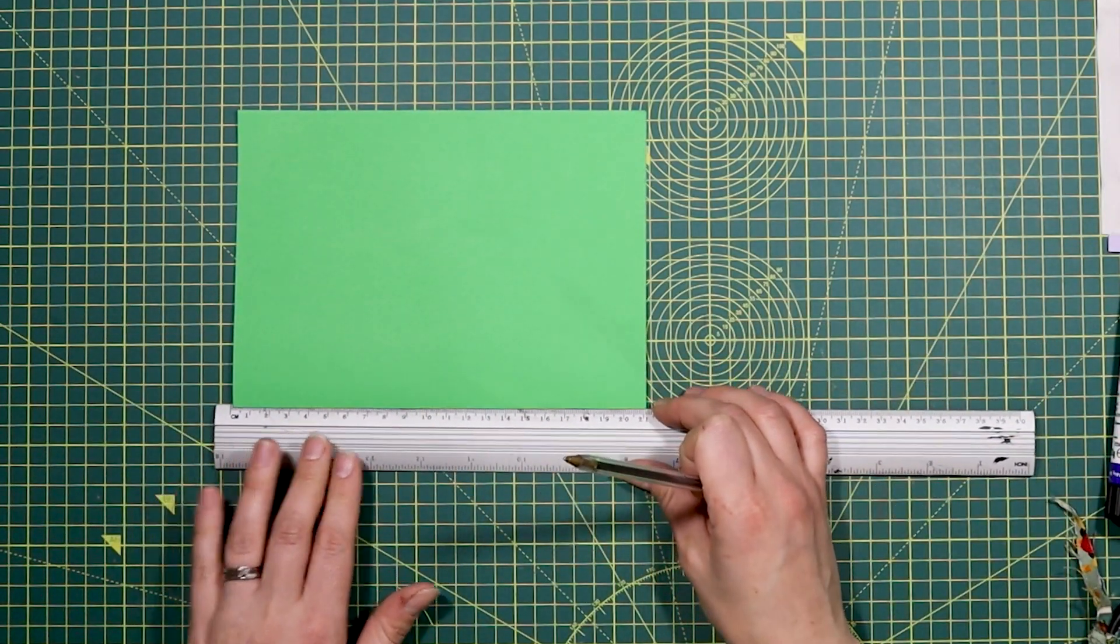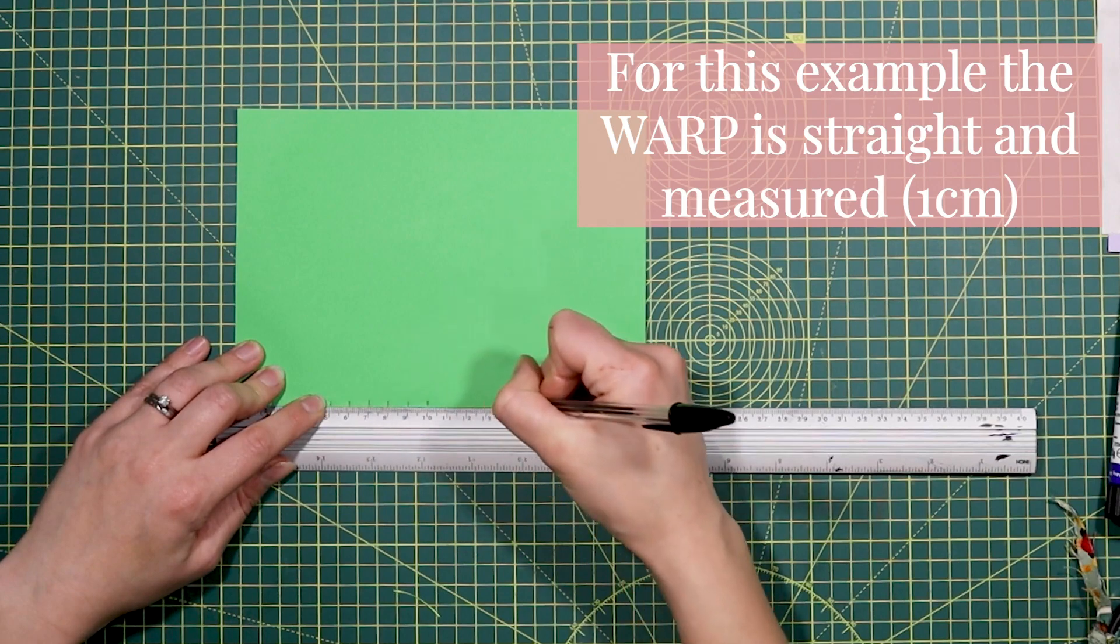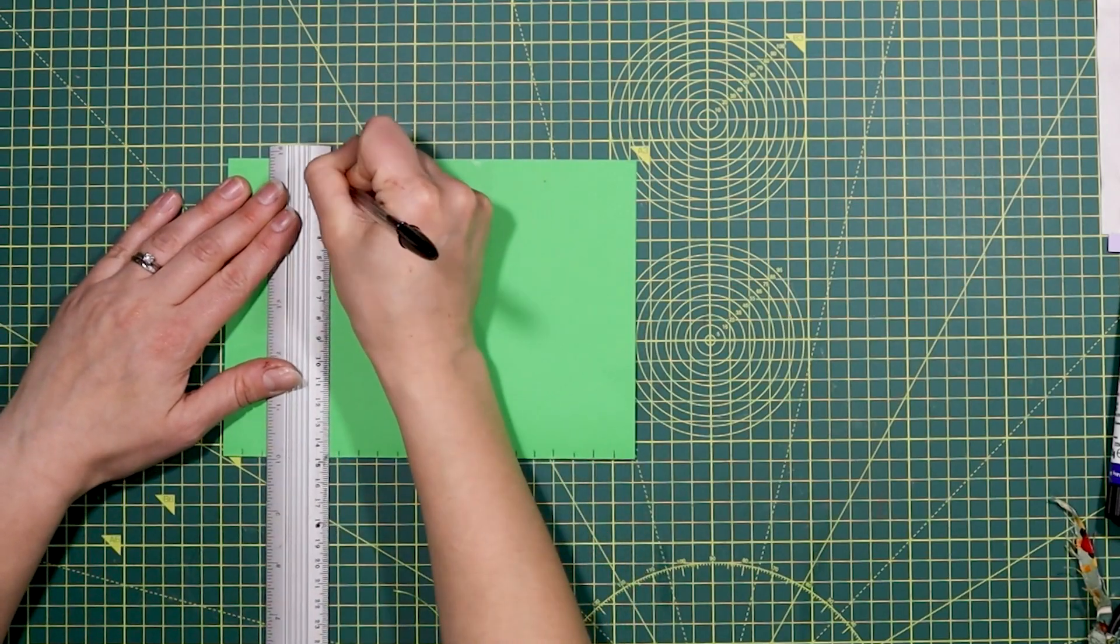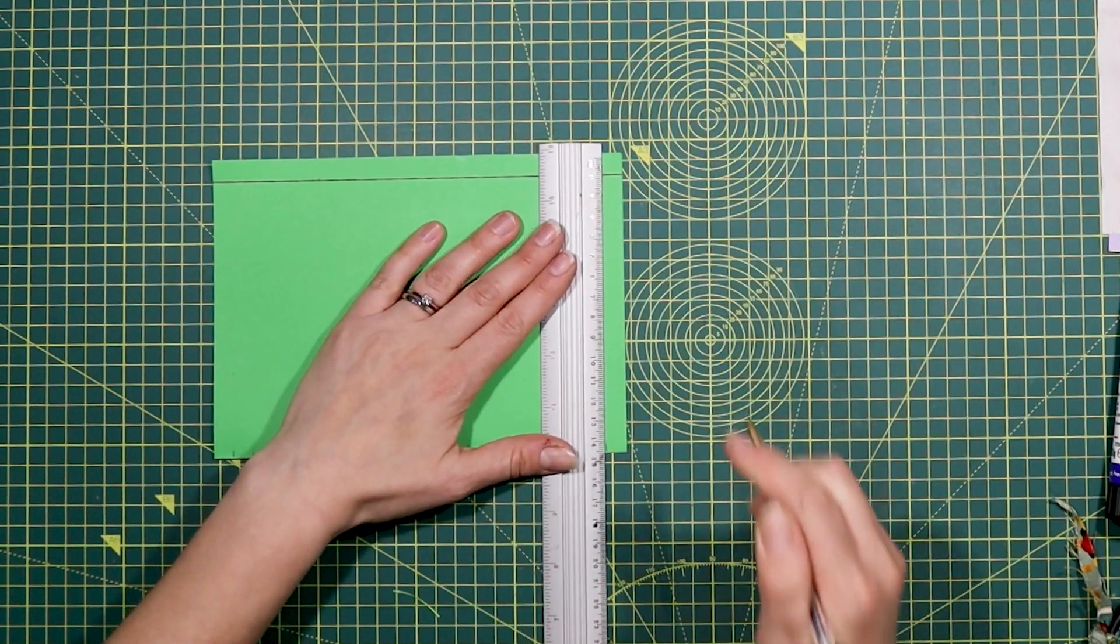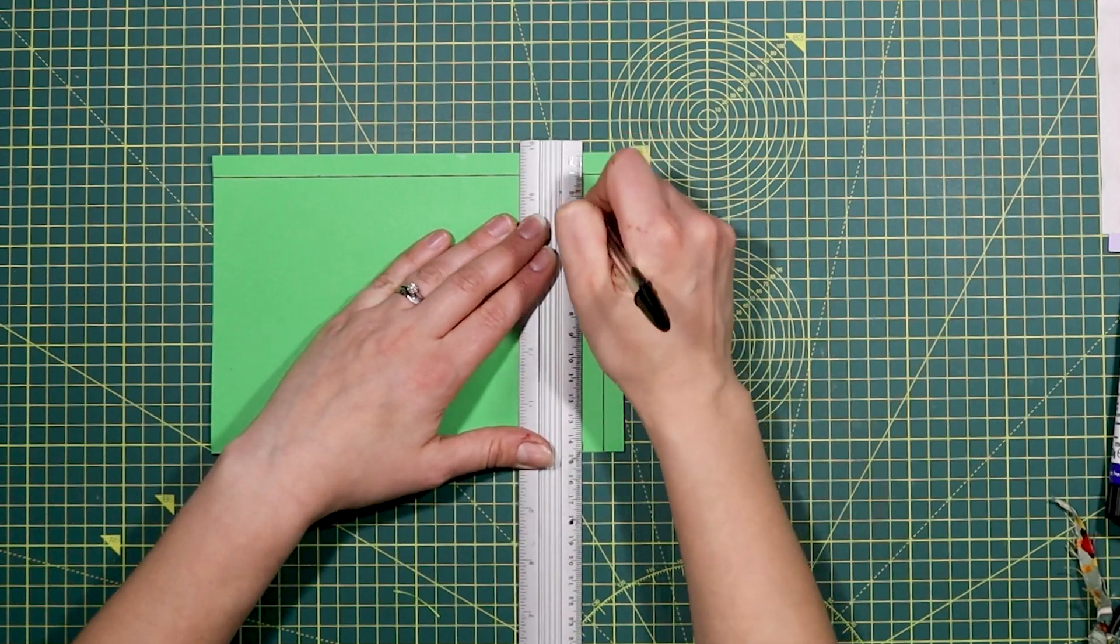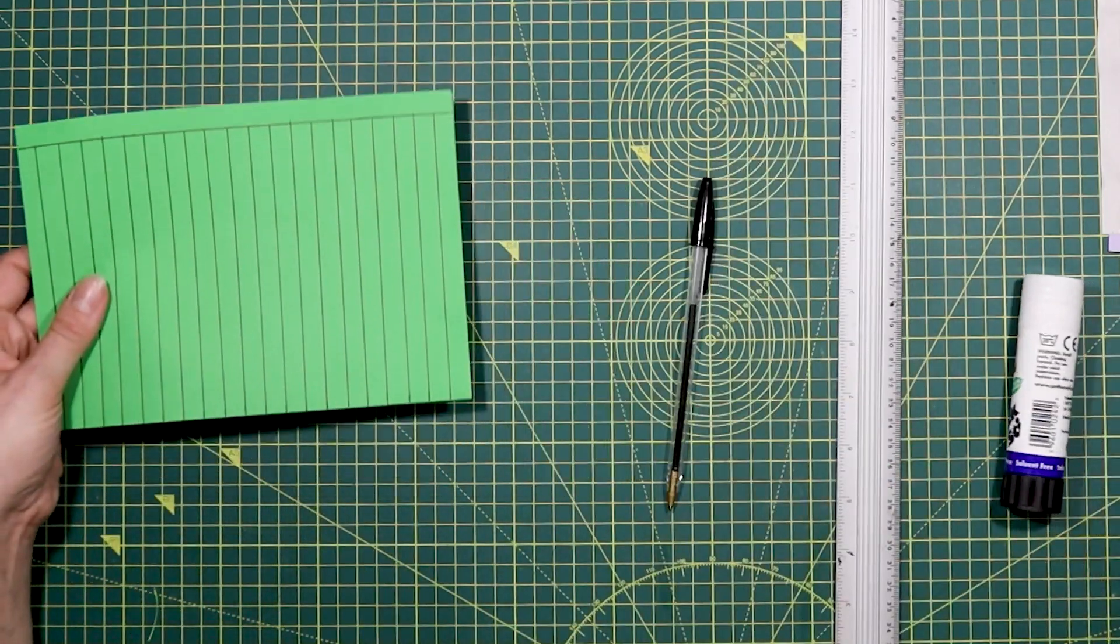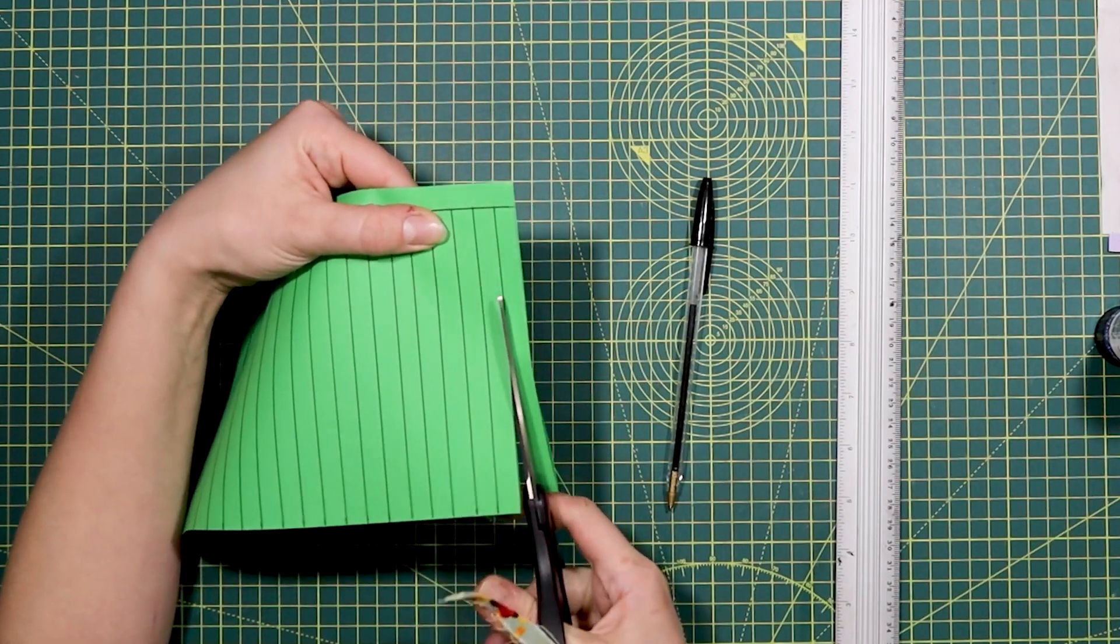For this second paper weave example, I've chosen to be a bit more accurate with my measurements, and I'm measuring 1cm spaces for my warp. Like before with my wonky weave, I just need to make sure that this is nice and precise, and that I stop at that top line.